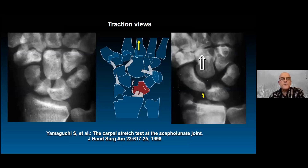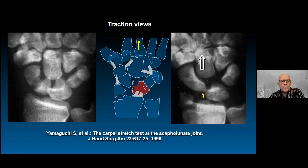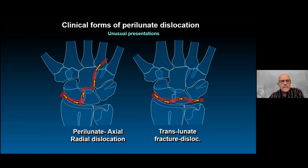Traction views are important — David Green insists all these patients need X-rays under traction, which reveals fragments, intra-articular loose bodies, and fragment displacement. Using traction, we can also identify rarer combinations such as the perilunate axial-radial dislocation — a perilunate dislocation that starts normally between the scaphoid and radius, creates scapholunate dissociation, but then instead of completing the perilunate arc, produces an axial dislocation distally.